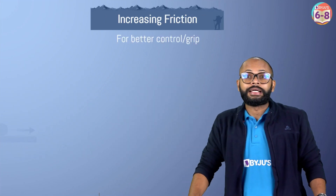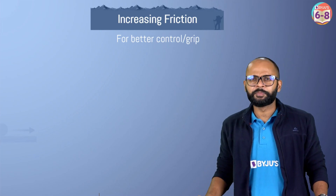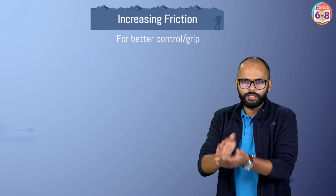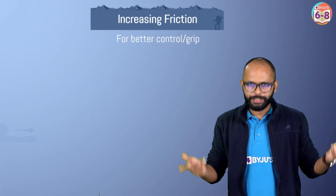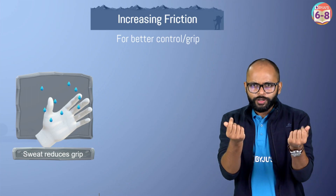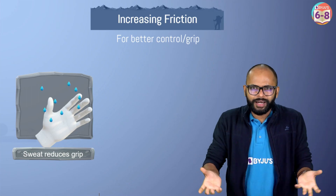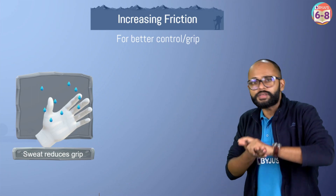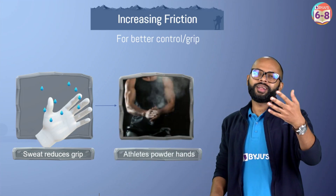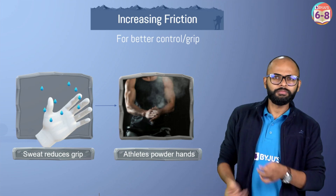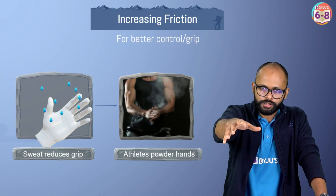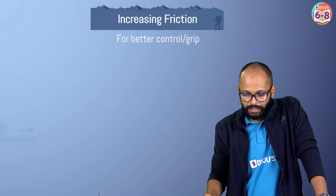Now let's understand exactly when we want to increase friction for better control or grip. You might have seen people doing this - putting powder on their hands. Why? Because sweat reduces your grip. When your hands are sweaty, they start to slip. So you need something to dry your hands - powder. In wrestling (Kushti), they sometimes put sand. You are trying to increase friction because you want more grip.